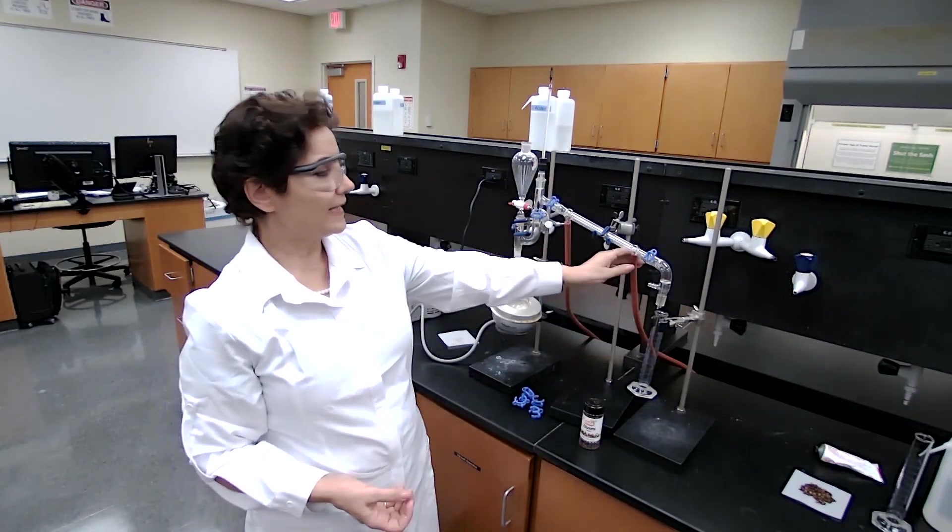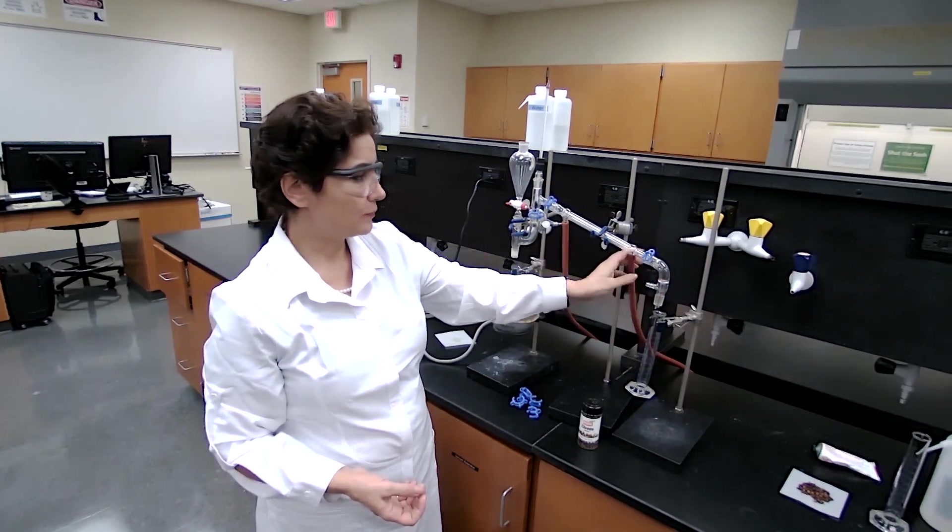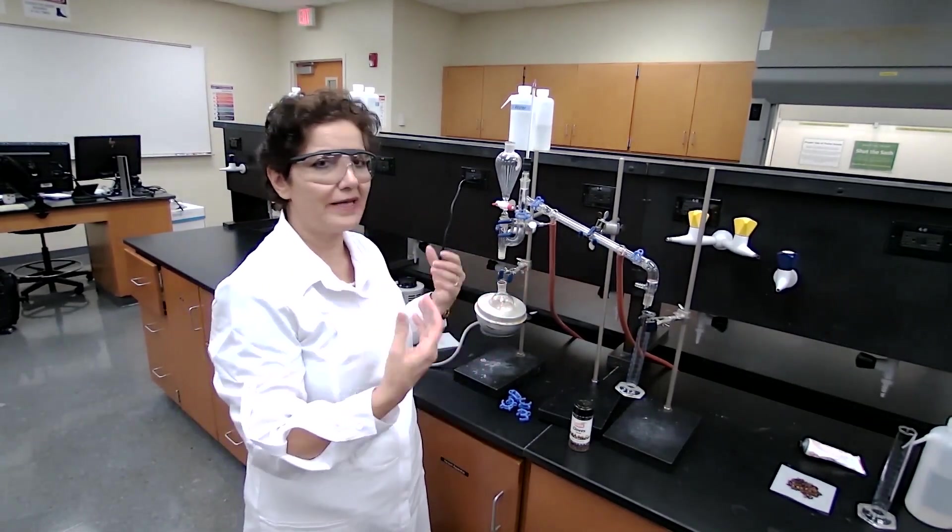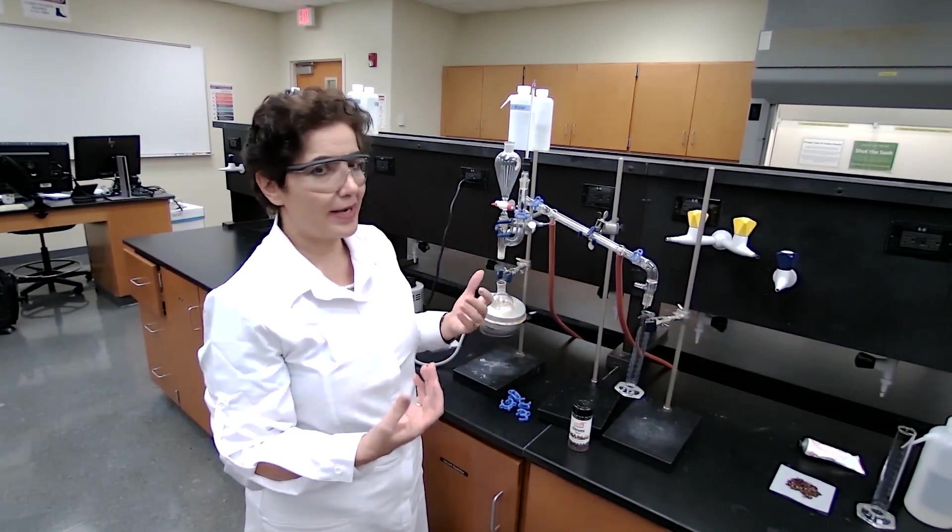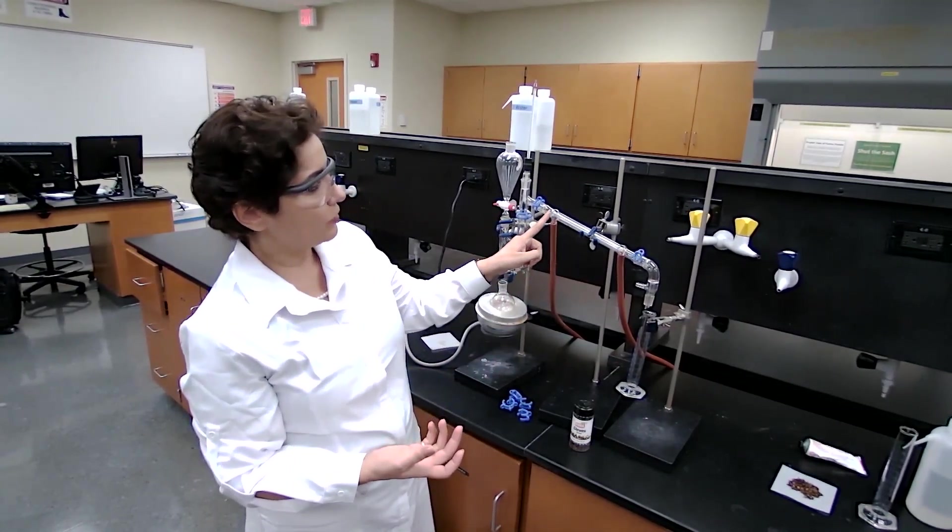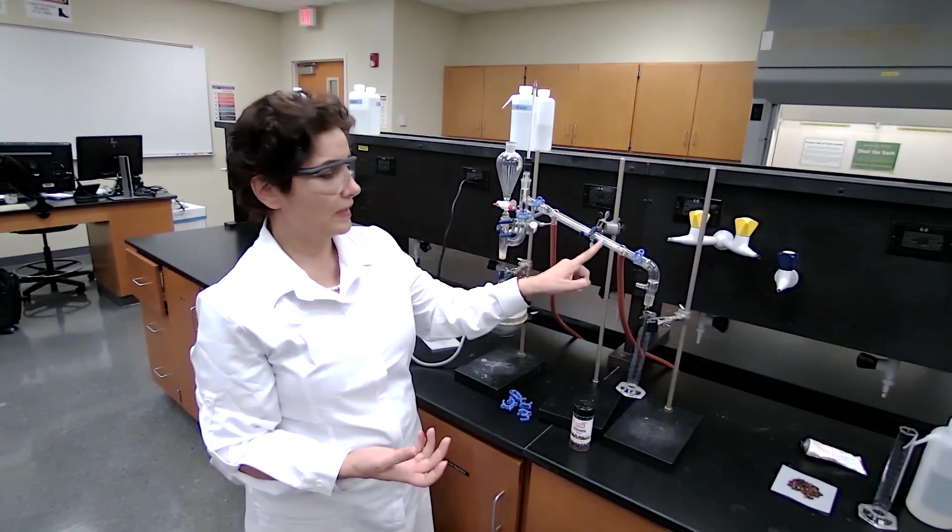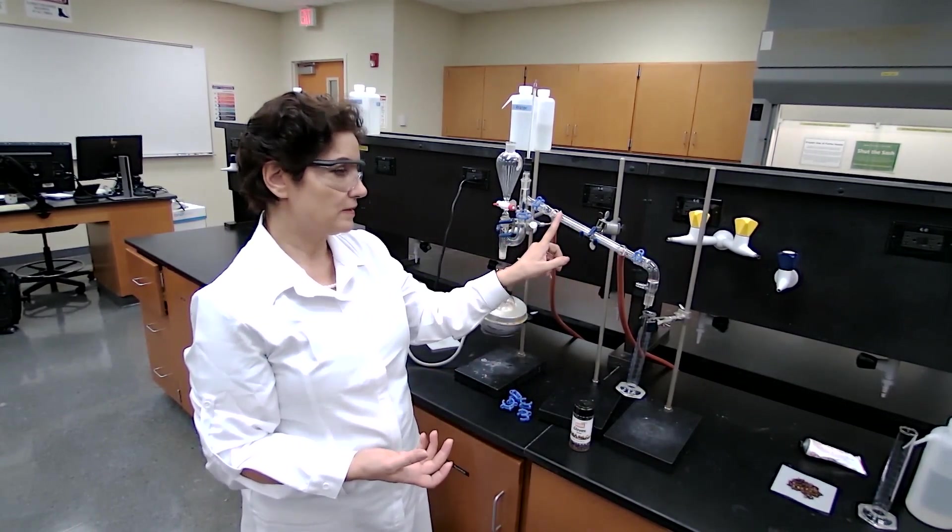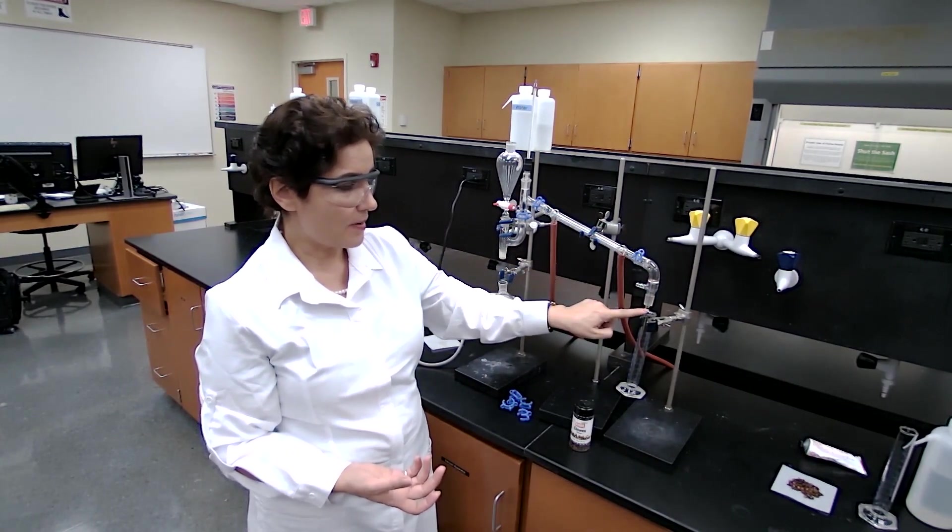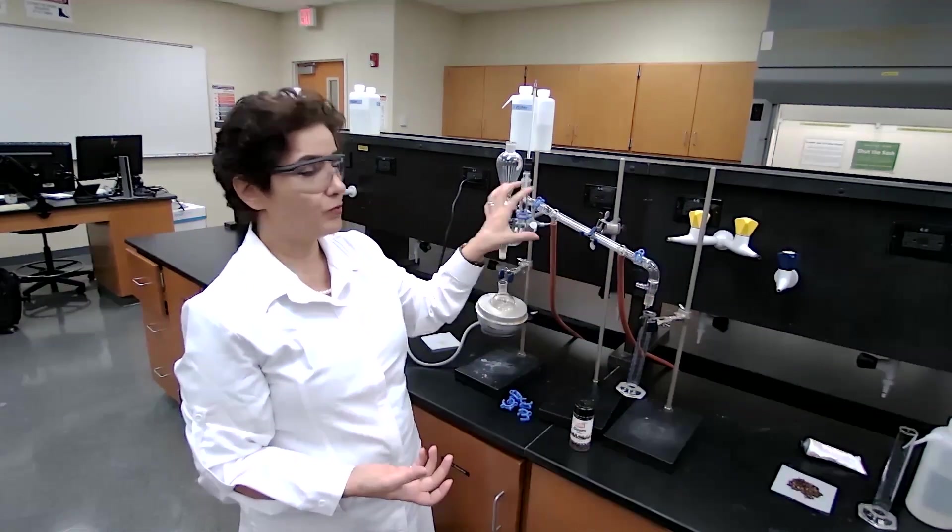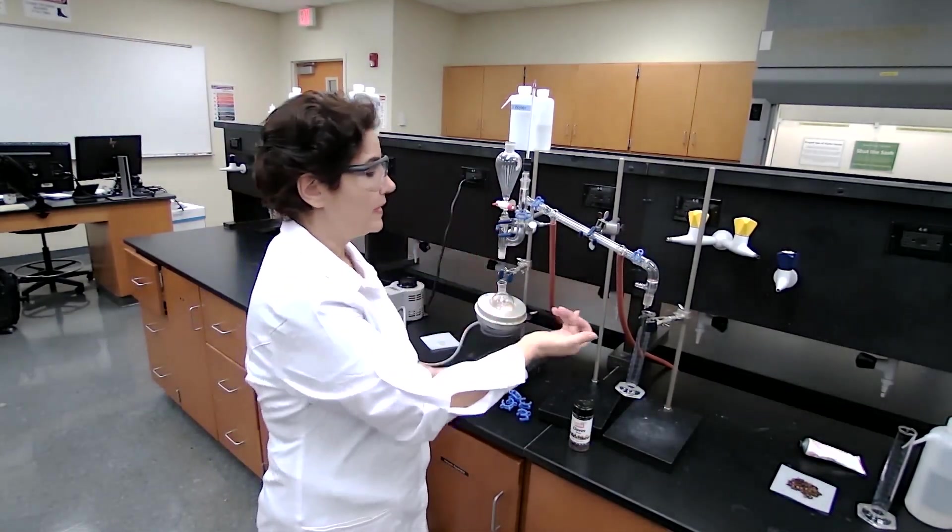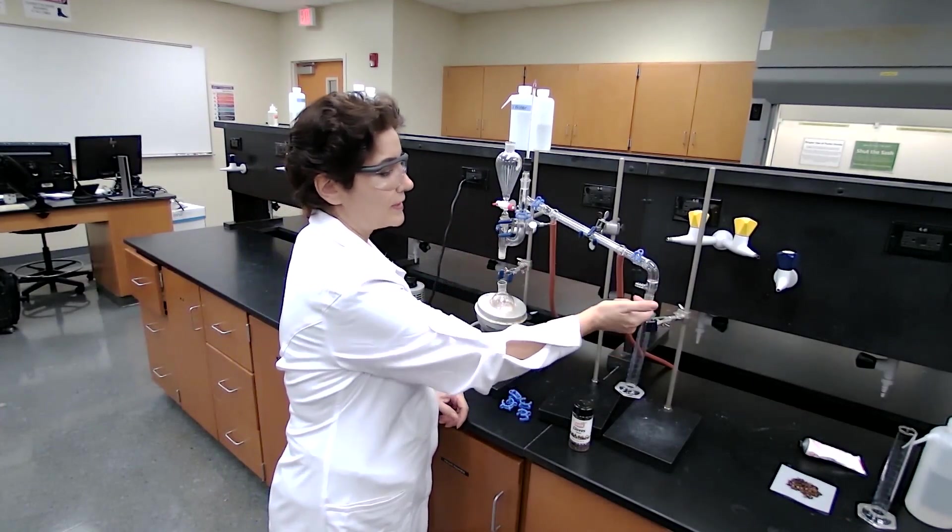You notice that I have these rubber hoses attached. That's just for emergency, in case it's needed. I don't want to turn on the water to begin with because I don't want the oil to freeze in the condenser or block the vacuum adapter, because I cannot boil anything in a closed container. It has to be open, so we cannot block this.